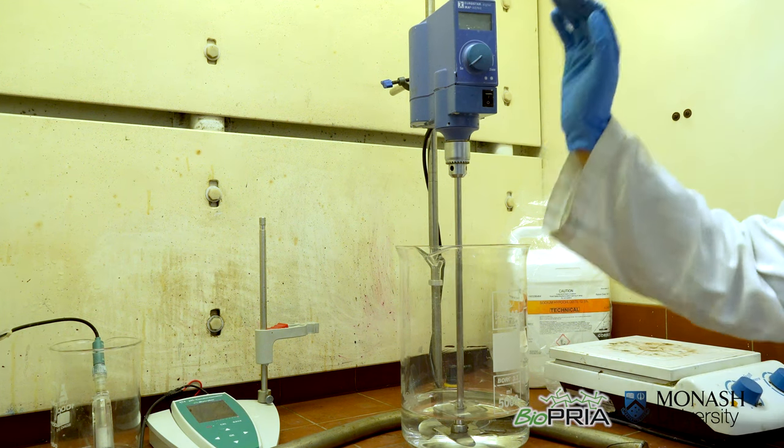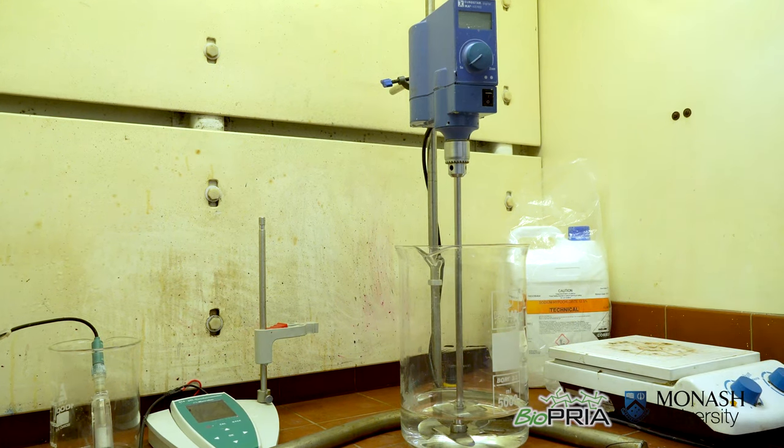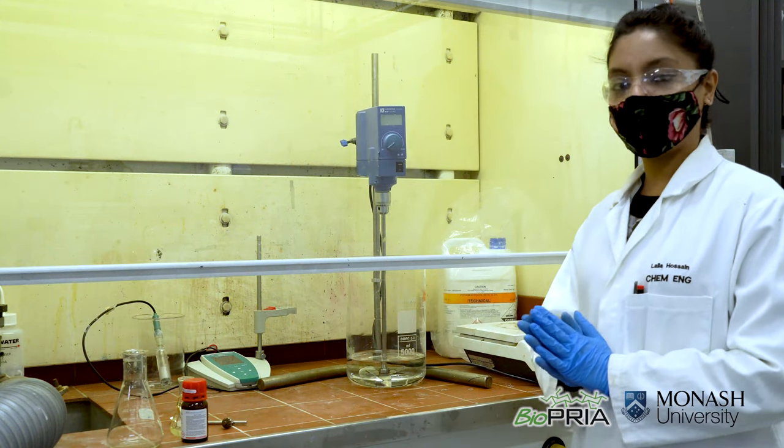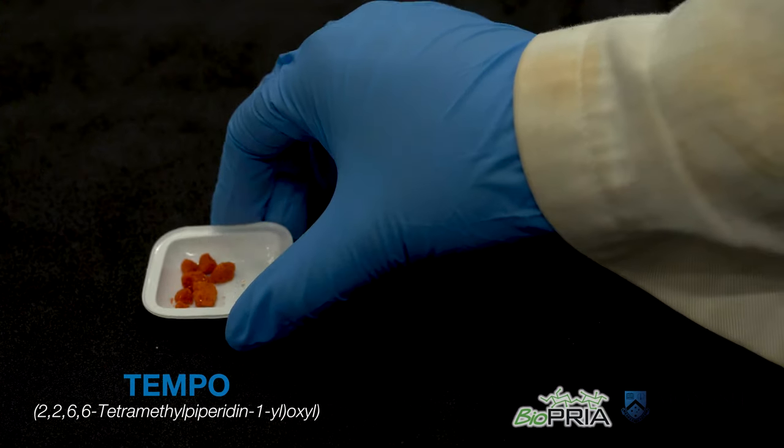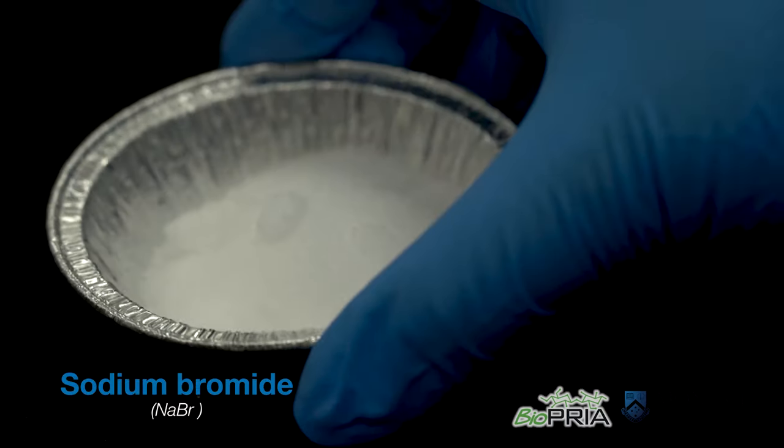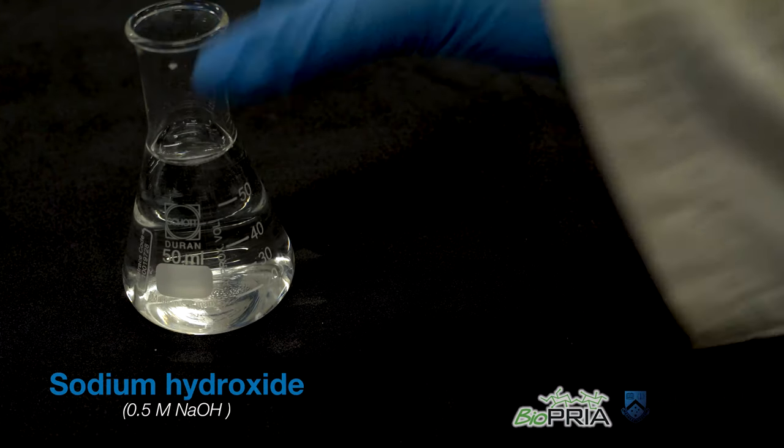We also need an overhead stirrer and pH meter to maintain the pH throughout the reaction. For this experiment we need bleached eucalyptus kraft pulp, TEMPO, sodium bromide, sodium hypochlorite, and sodium hydroxide.